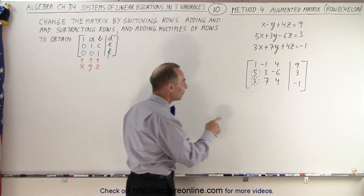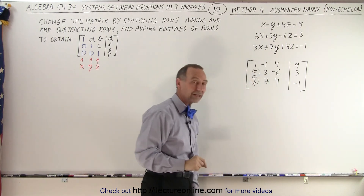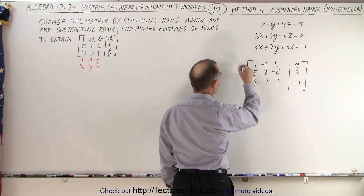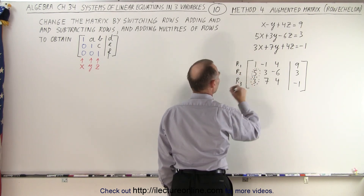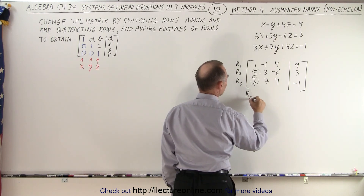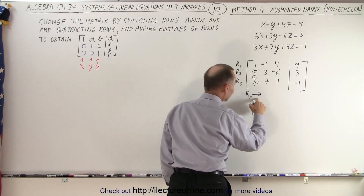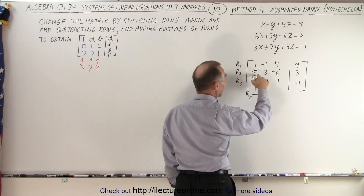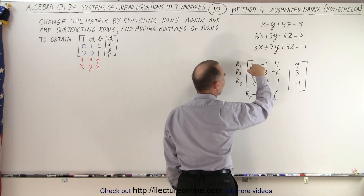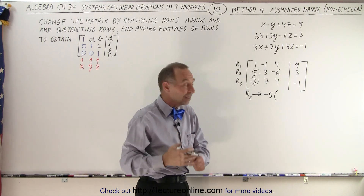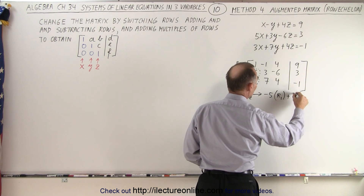How do we take the 5 and turn it into a 0? We just care about making that a 0. Row 1 has the 1 in it, Row 2 has the 5, and Row 3 has the 3. We take Row 2 and replace it by negative 5 times Row 1 added to Row 2. That's because negative 5 times 1 is negative 5, and negative 5 plus 5 equals 0.